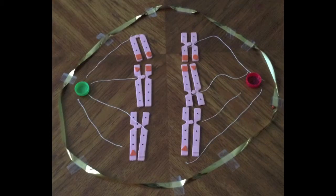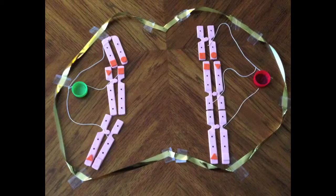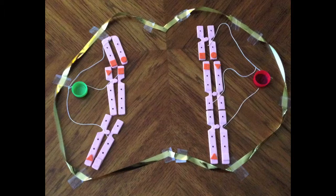The spindle fibers attached to the chromosomes start to pull them apart. They are brought to opposite sides of the cell. This is the end of meiosis I. After the chromosomes are at the opposite poles of the cell, cytokinesis begins to occur and the cell starts to divide into two.